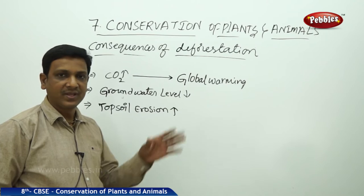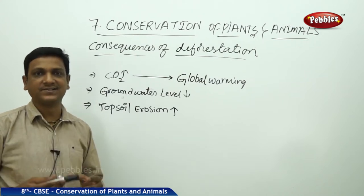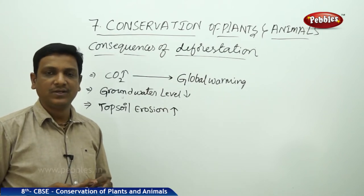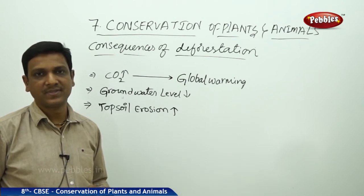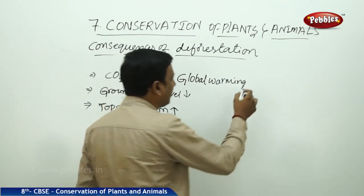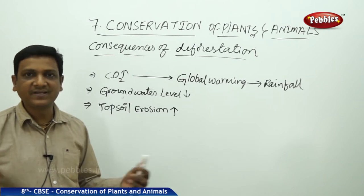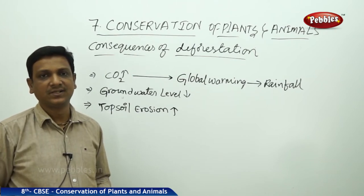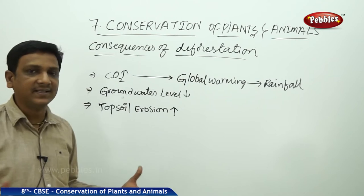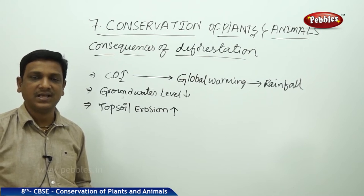Global warming disrupts the water cycle and monsoon and rainfall patterns. We have a specific monsoon season when crops are planned around rainfall, and if that is disrupted, it affects farmers greatly. A decrease in rainfall or unexpected rains leads to loss for farmers and less crop production. The high amount of carbon dioxide increases temperature, which has many effects on plants, animals, and human beings.